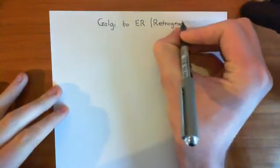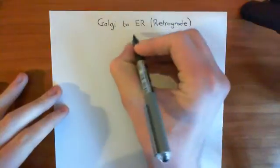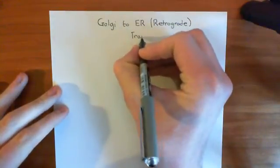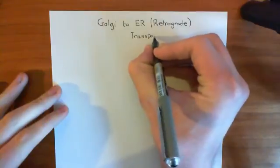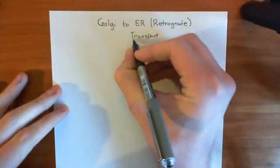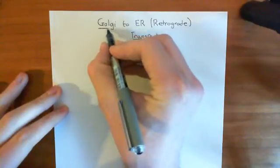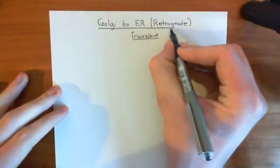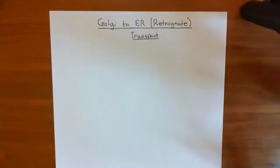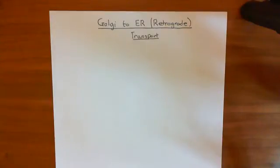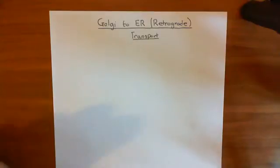The format for this video is that first I'm going to give you the bigger picture of what we're doing. We'll have a look at the structure of the cell, the endoplasmic reticulum, the Golgi, and the different parts of the Golgi, and where the vesicles transporting proteins from the Golgi to the ER will bud off from. Then we'll look at the budding process, their transportation back to the ER, and how they fuse with the ER membrane.